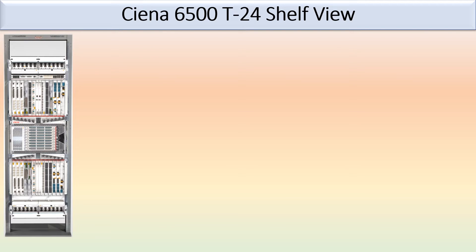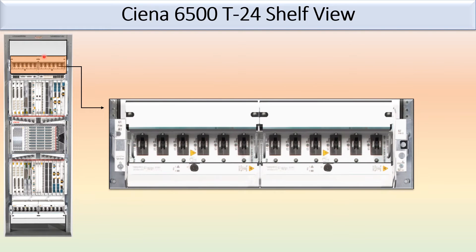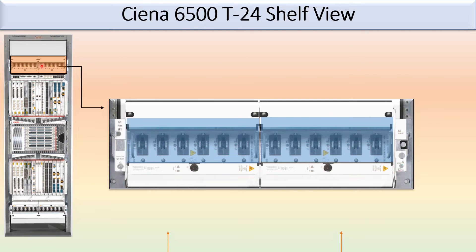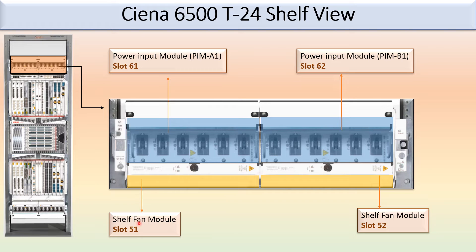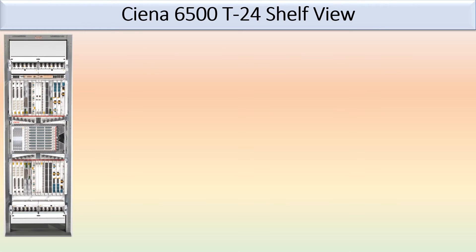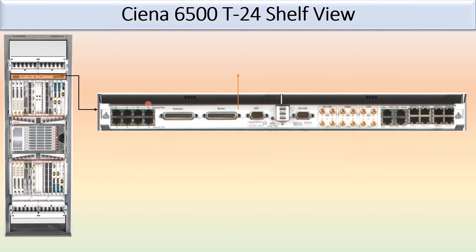This is the Ciena 6500 T24 shelf view with a bigger representation of each module, showing the clear and exact position of the different modules. On the top you can see the power input module at slot 61 and slot 62, the shelf-end module at slot 51 and slot 52, and the slot 40 access panel with a larger, clearer picture.